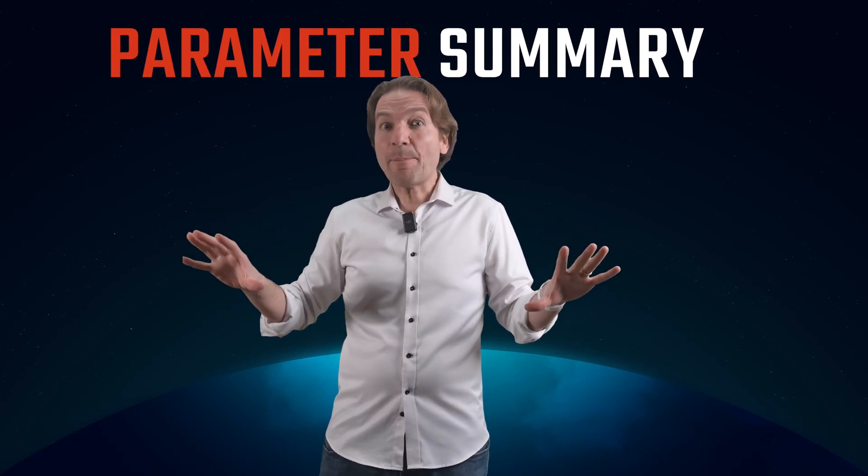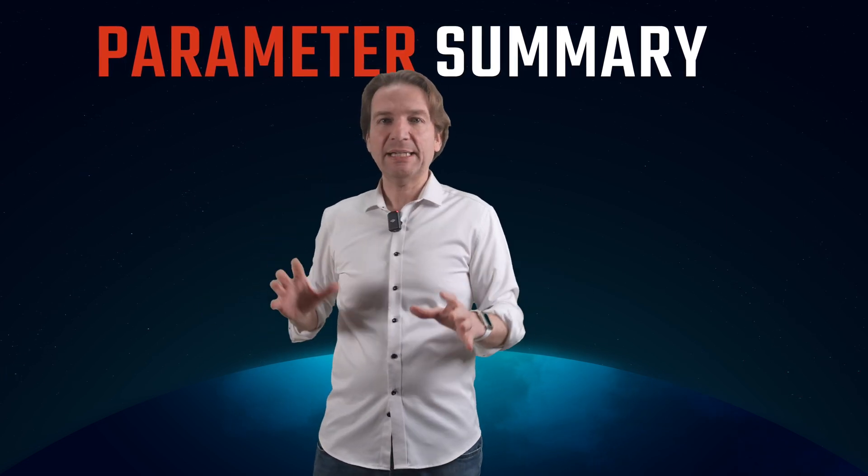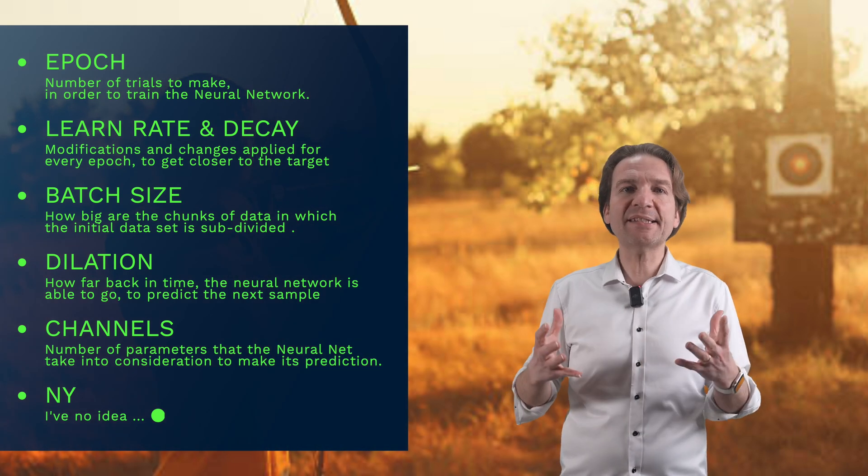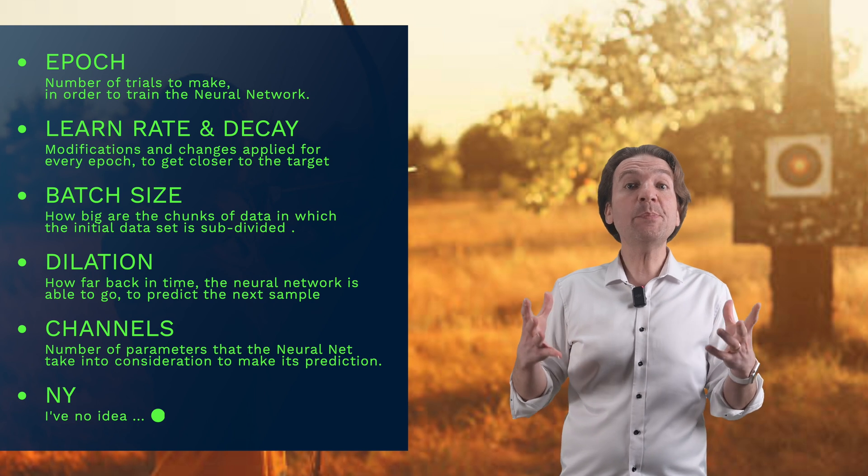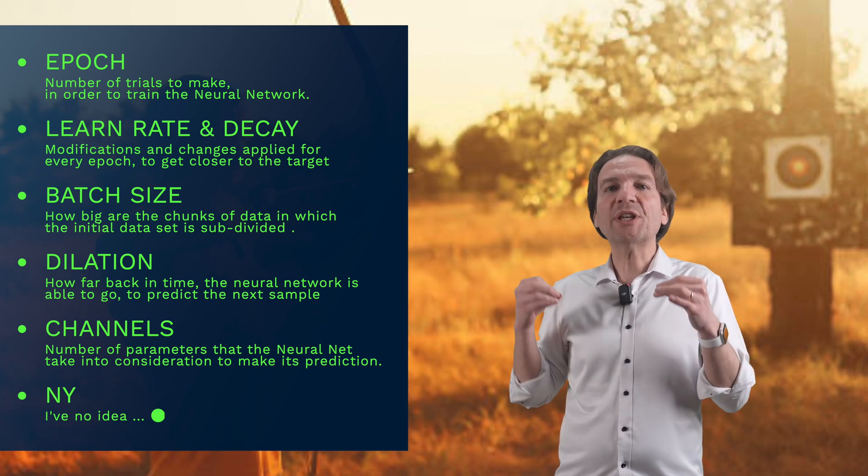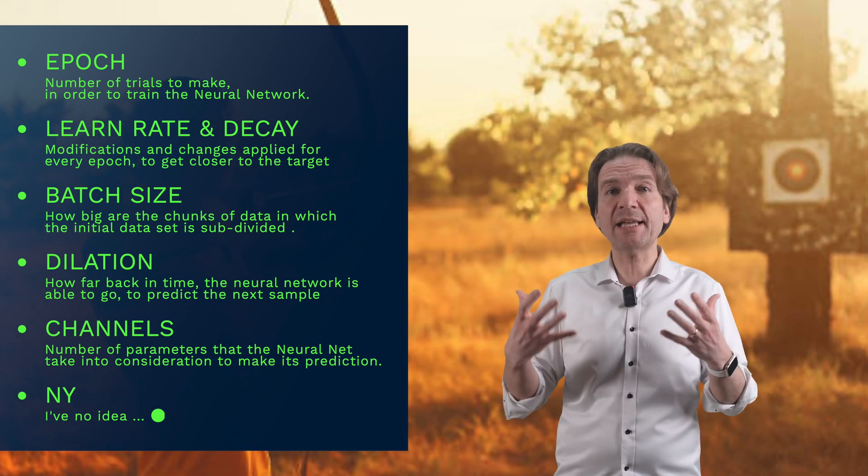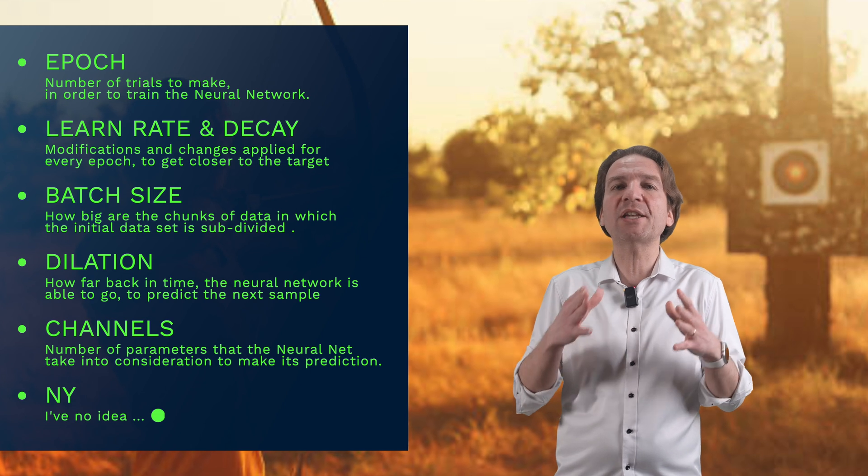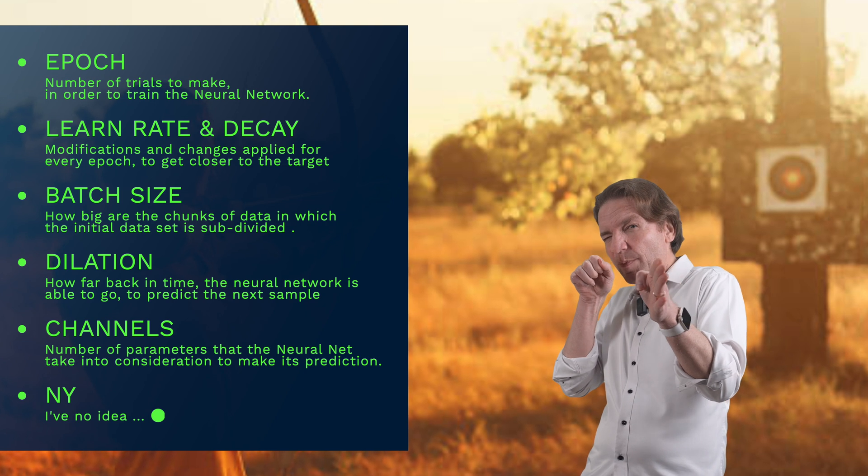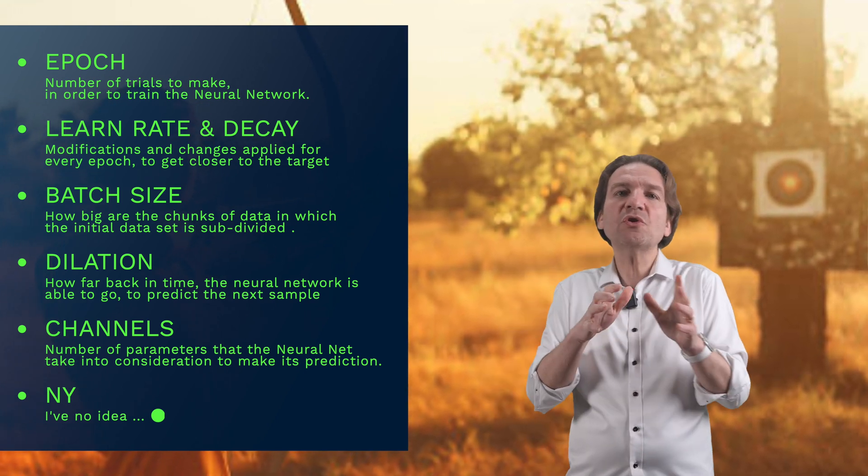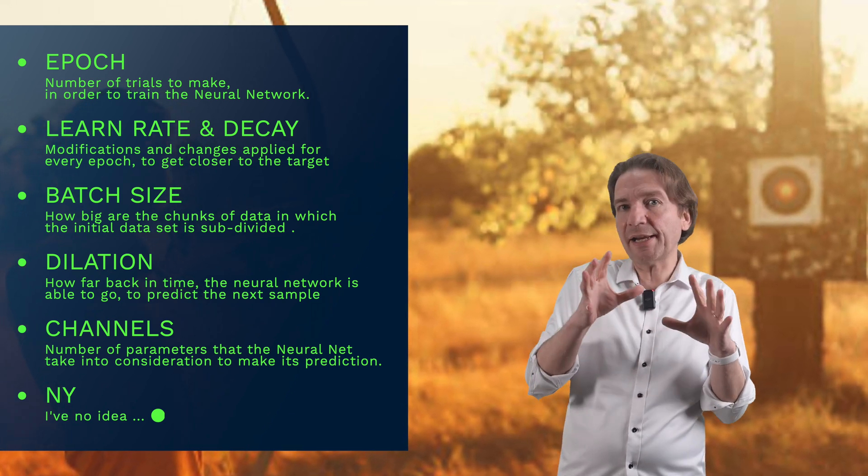OK, let's try to summarize the meaning of all these parameters with our archer example. The epoch is the number of trials I will make to train myself. For instance, 100 epochs means that I will try to hit the target 100 times, hoping that with every trial I will improve the quality of my shoot. The learning rate is how much changes I make for every shoot, hoping to get closer to the target every trial.